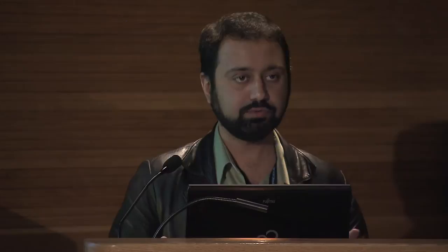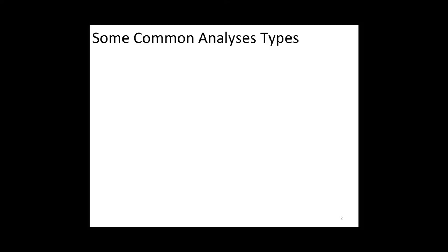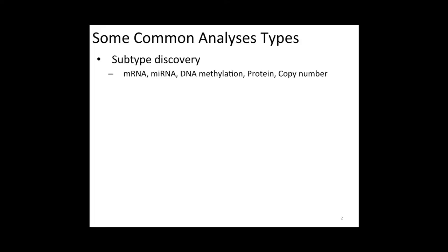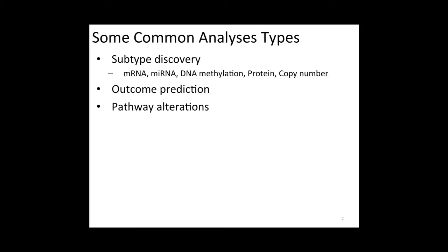There are some tumor types in which the marker paper is not yet out — for example, kidney. For those, you will just see one entry, and the kidney paper is about to be published soon. Some common analysis types you can expect to see in the marker papers are: subtype discovery based on mRNA, microRNA, DNA methylation, protein, and copy number; outcome prediction; survival; pathway alterations; copy number profiles; cross-tumor comparisons; and many others.